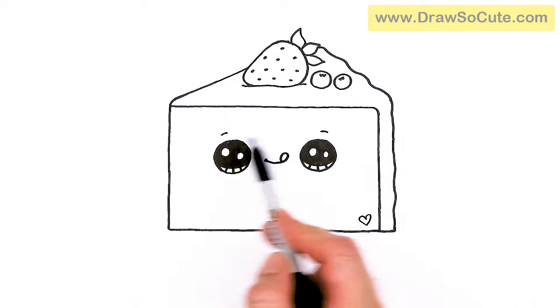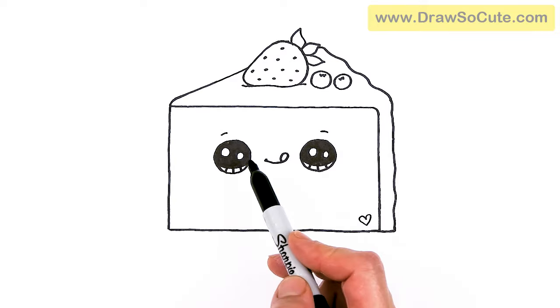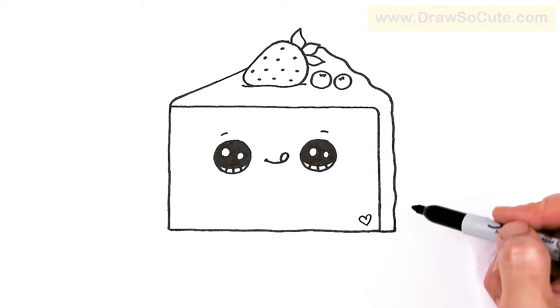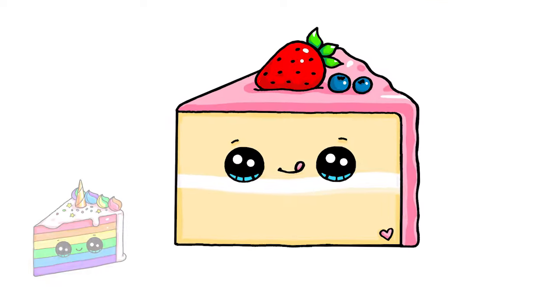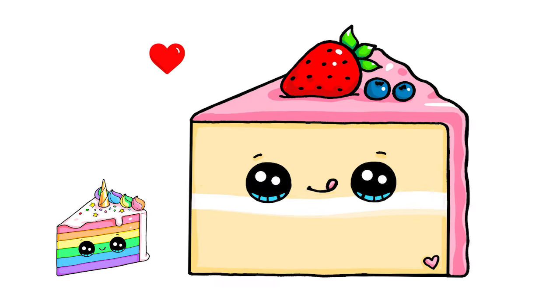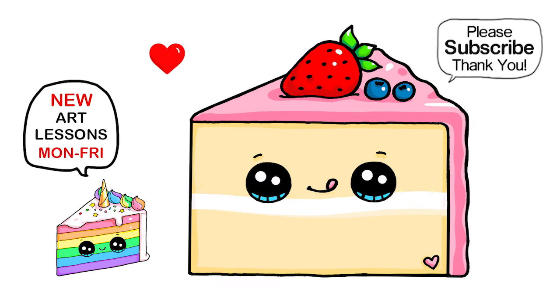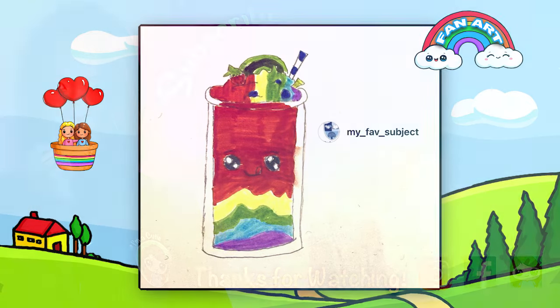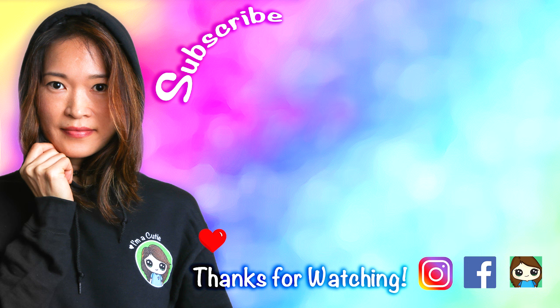And when you're coloring, you can add in some different layers, maybe some pinks and like strawberry, vanilla, or whatever flavor you want your slice of cake to be. And that is pretty much it. I really hope I helped you draw this slice of cake fun and easy today. And that inspires you to draw it too. Thanks so much for watching. And if you loved it, please make sure to give me a like and subscribe so you won't miss any new Draw So Cute videos. See you later.